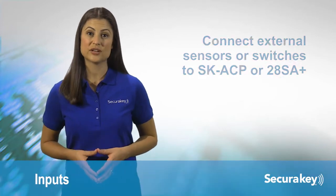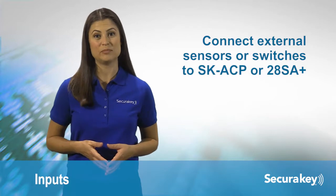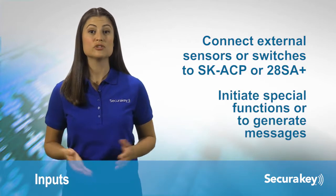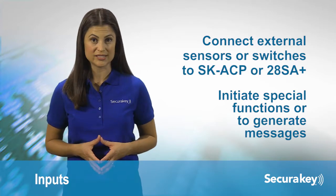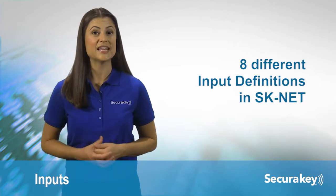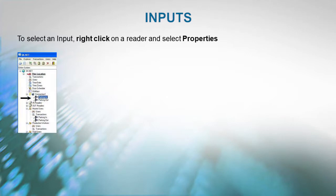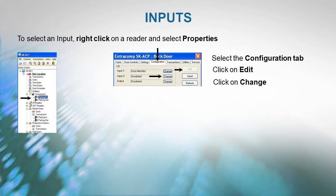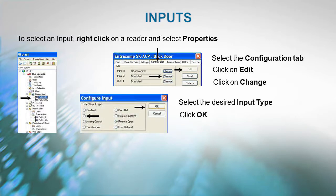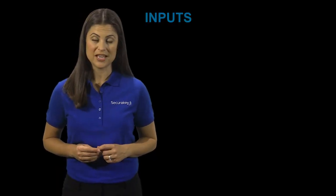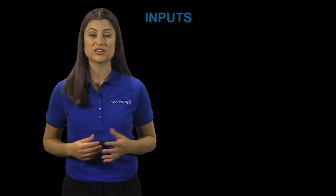Inputs are circuits that connect external sensors or switches to an SKACP or 28SA+. They are used to initiate special functions or to generate messages and transactions. There are eight different input definitions you can choose in SKNet. To select an input, right-click on a reader and select Properties, select the Configuration tab, click on Edit, click on Change, select the desired input type, click OK, then Send to the reader. Note: Remote Open is the most common input used — it activates the Latch Relay for the same time as a valid card use, and a Door Open Via Sensor message appears in the transactions.